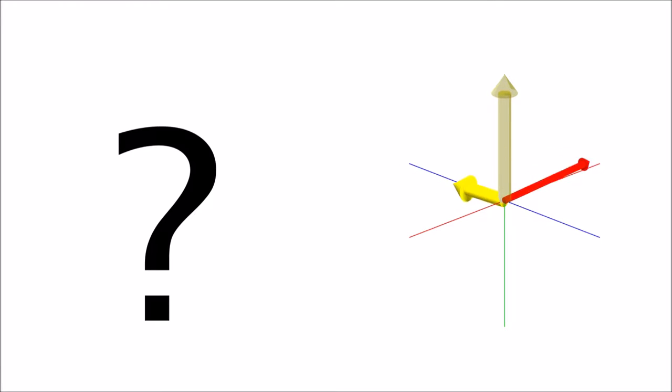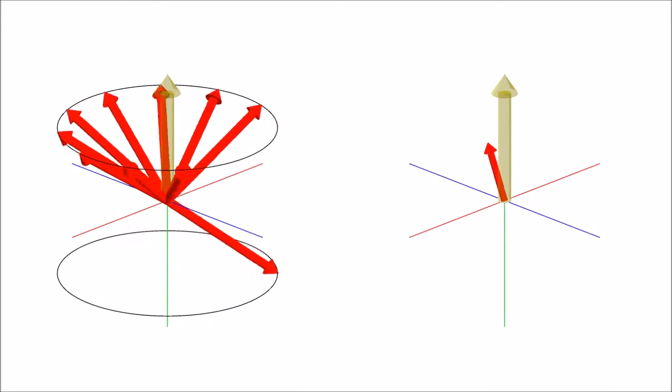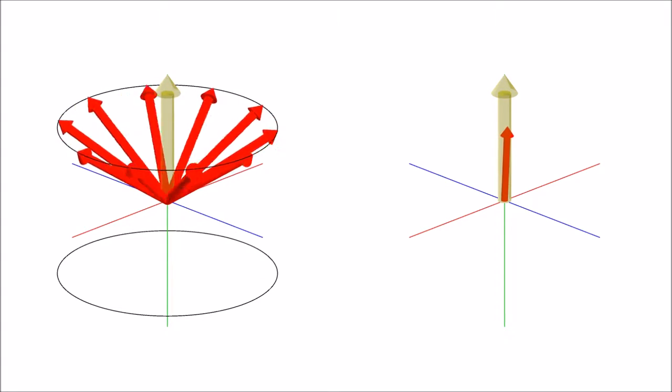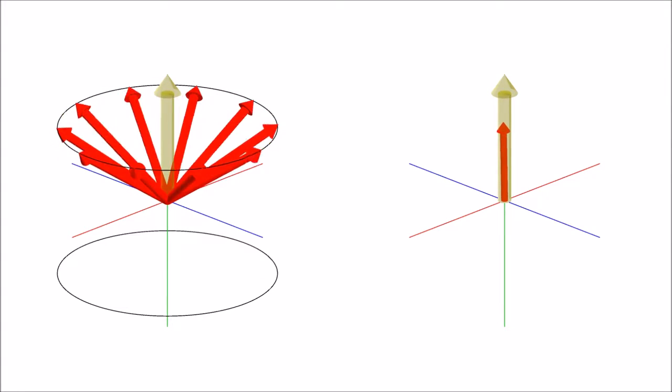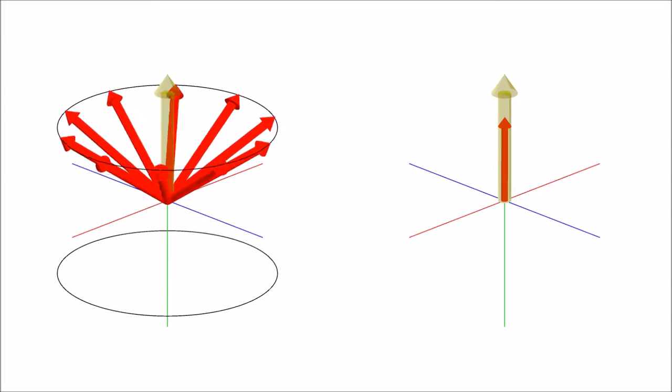the dipoles drop back into their original energy levels. However, they are evenly distributed between the two energy levels and they're coherent within the x-y plane, which means that they make an oscillating magnetic field in the x-y plane. That's what we measure.